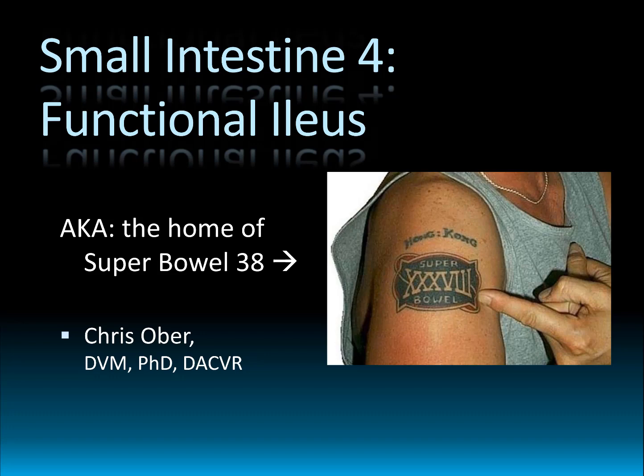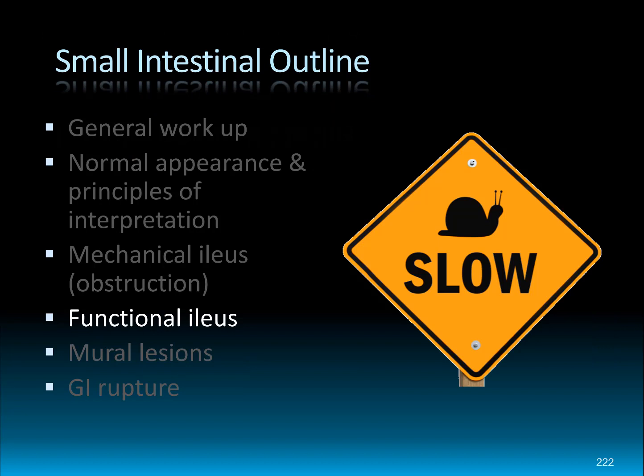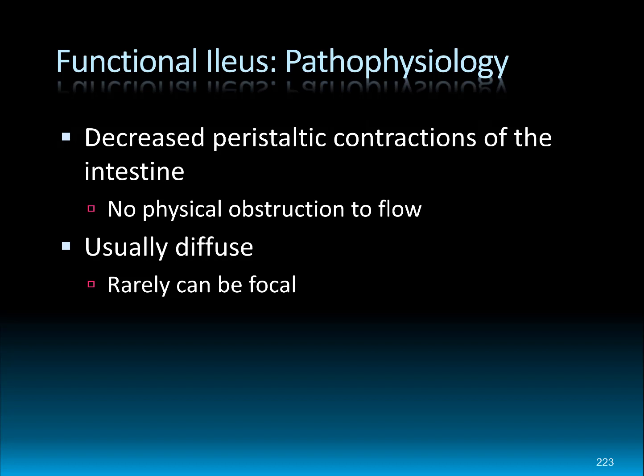In this fourth chapter of the small intestine saga, I'm going to be talking about functional ileus, as a counterpoint to the mechanical ileus from parts two and three. A functional ileus is a slowing down of the small intestine — it represents decreased peristalsis, which results in slowing of transit through the small intestine, but without any concrete physical obstruction to the flow of material in the lumen.